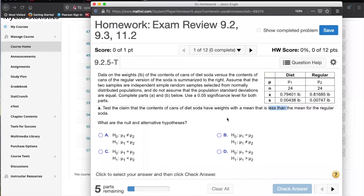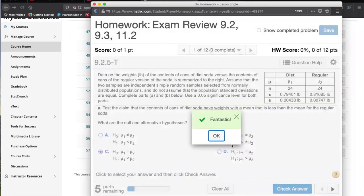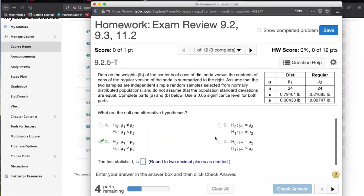So when they say diet is less than, they're saying μ1 is less than μ2. Yeah, so that would be the alternative hypothesis. The null hypothesis always has an equal sign, so μ1 equals μ2. Yeah, okay.